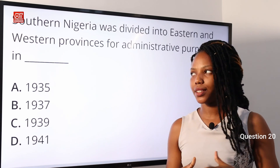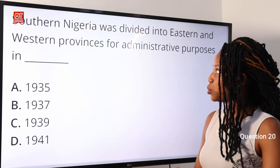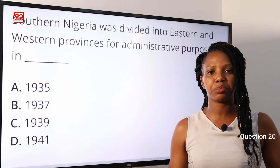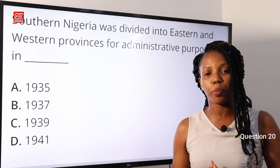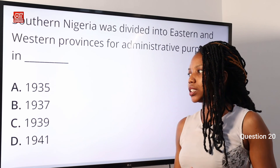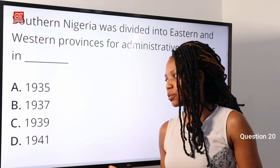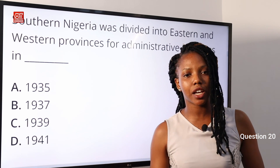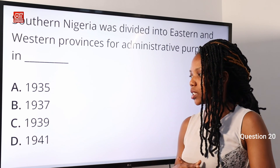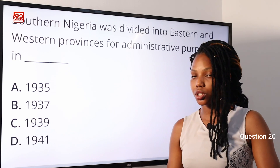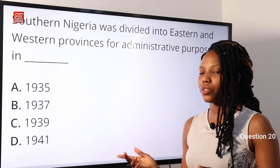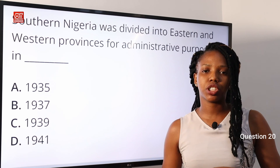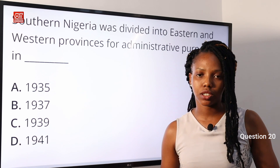Question 20: Southern Nigeria was divided into Eastern and Western provinces for administrative purposes in the year — A: 1935; B: 1937; C: 1939; D: 1941. The answer is C — 1939. Southern Nigeria was divided into the Eastern and Western provinces for administrative purposes in the year 1939.